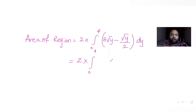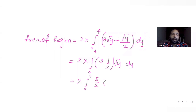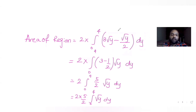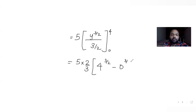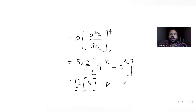Factoring out √y gives the integral of √y times (3 − 1/2) = 5/2 from 0 to 4. This simplifies to 2 × (5/2) times the integral of y^(1/2) dy from 0 to 4. The twos cancel, giving 5 × [y^(3/2) / (3/2)] from 0 to 4, which equals 5 × (2/3) × 4^(3/2). Since 4^(3/2) = 8, we get (10/3) × 8 = 80/3.